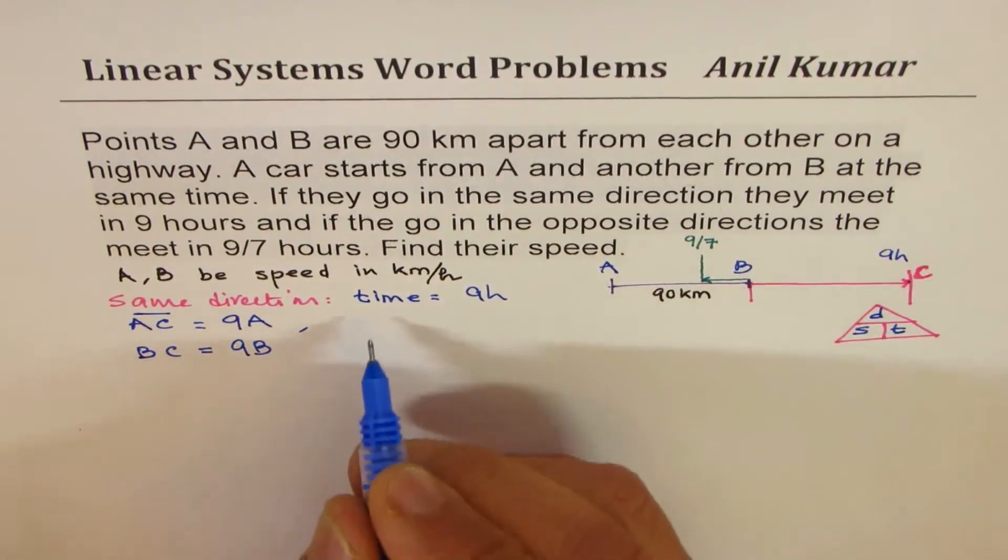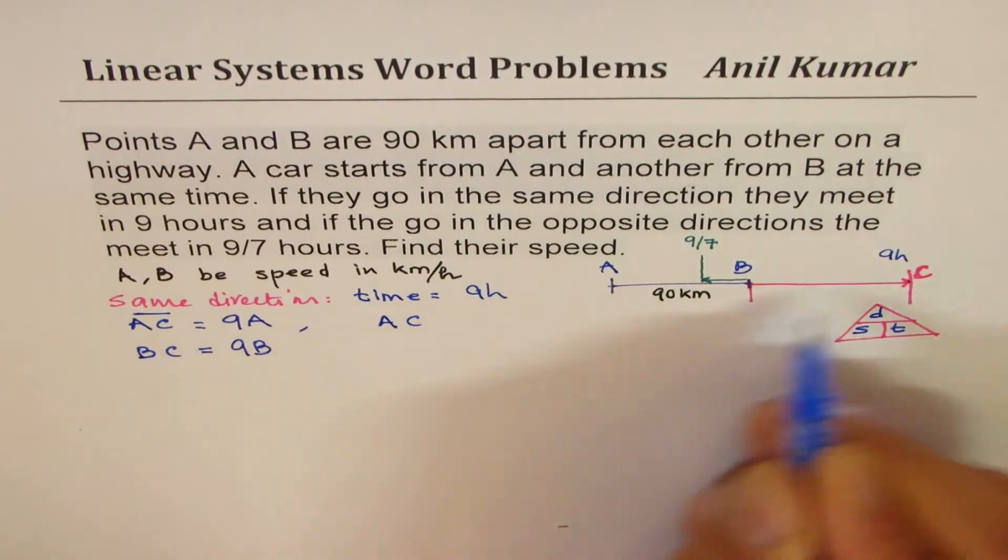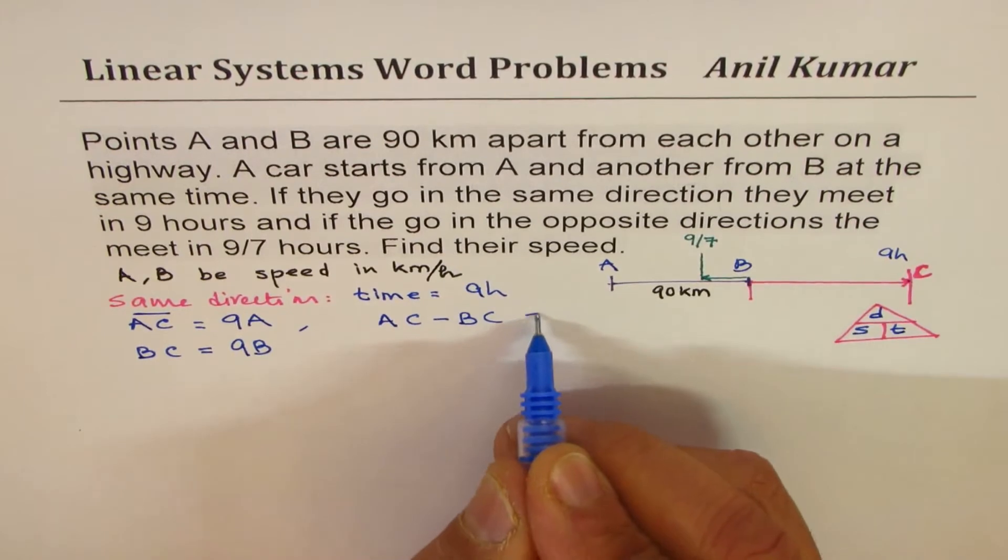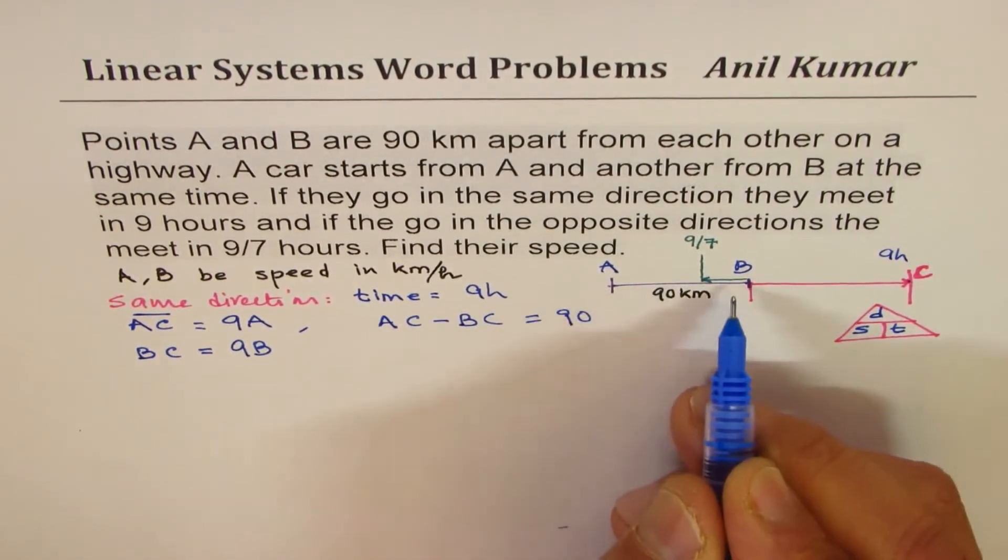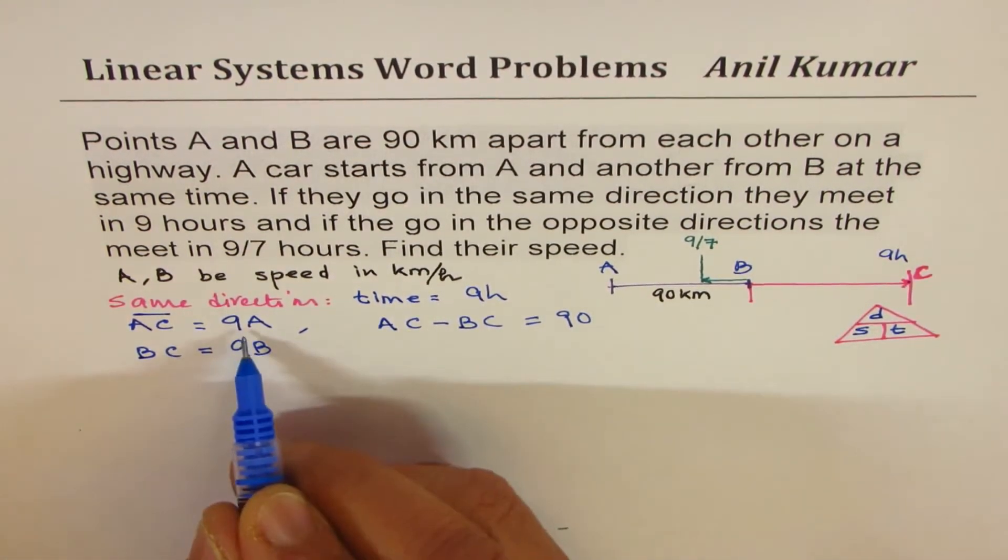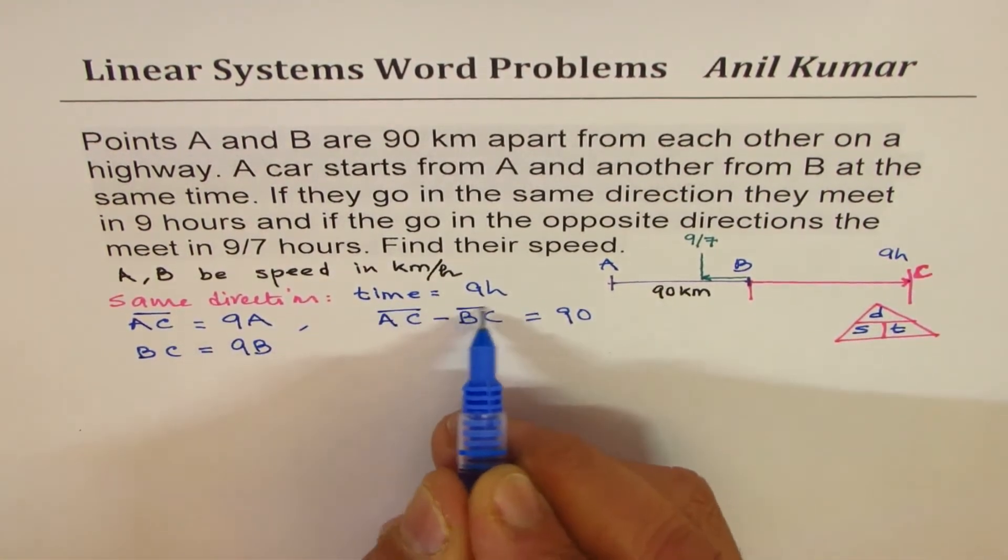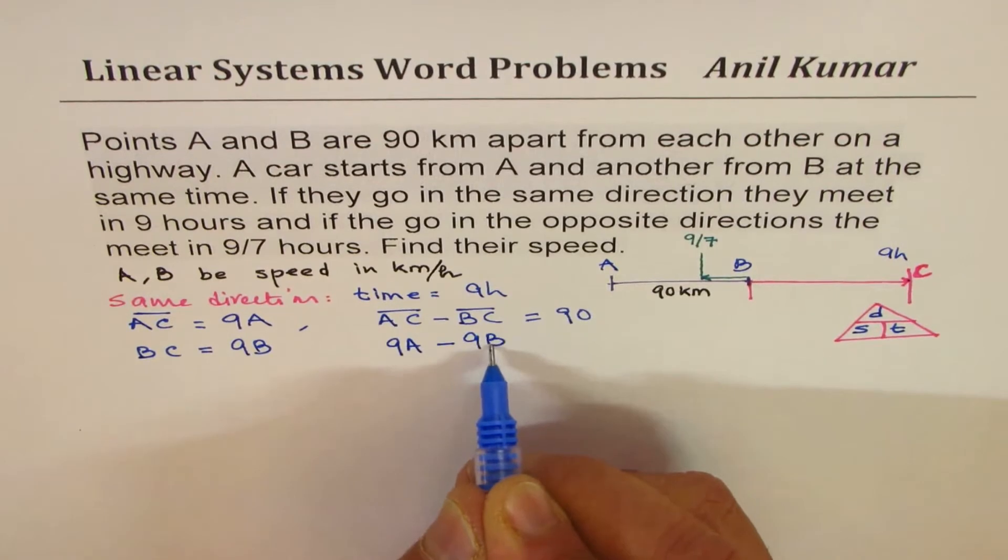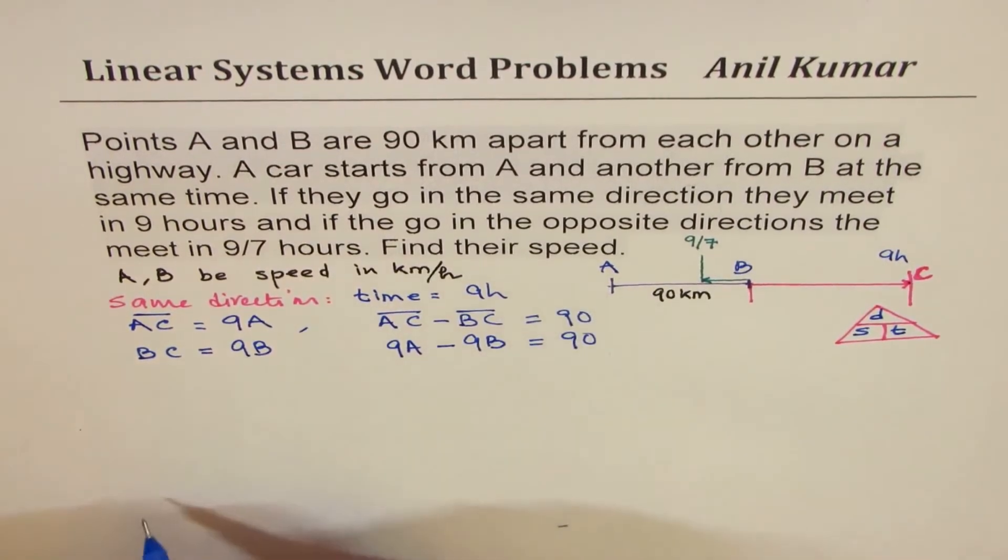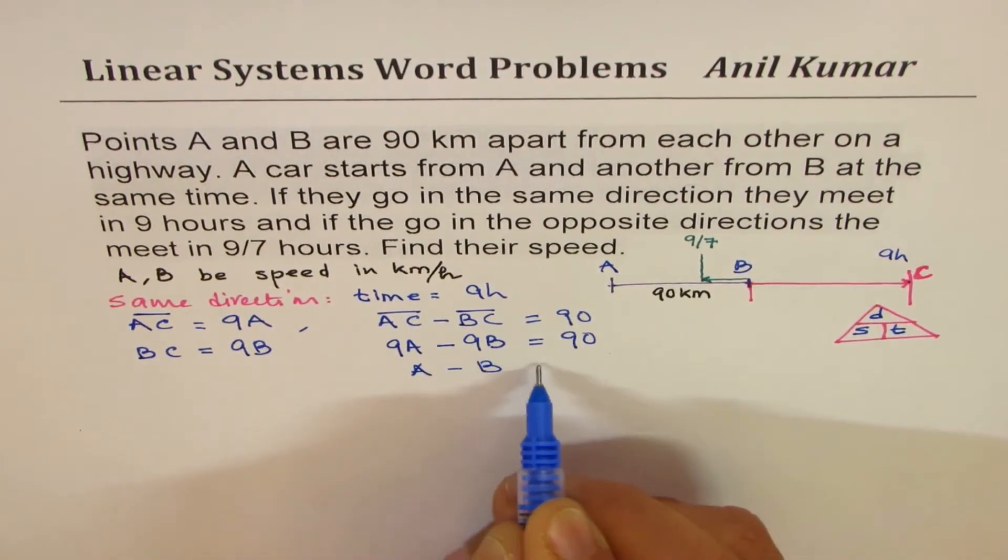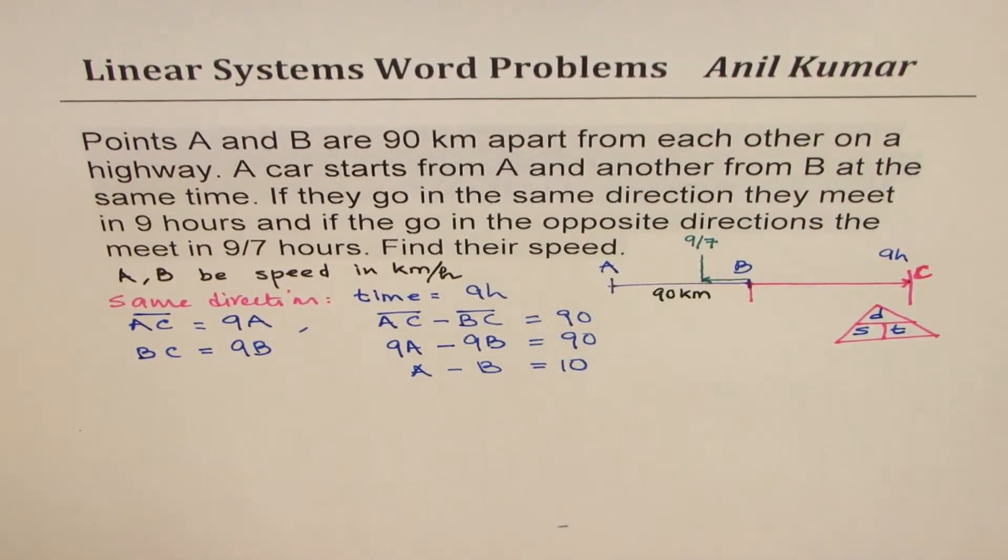And the difference in 2, that is to say, A, C minus B, C, that is difference of their distance, is 90 kilometers. A is traveling 90 kilometers extra, which means that we have an equation here. These are the distances. That 9A minus 9B is equal to 90. Dividing by 9, we get A minus B equals to 10. So we get one equation, A minus B equals to 10.